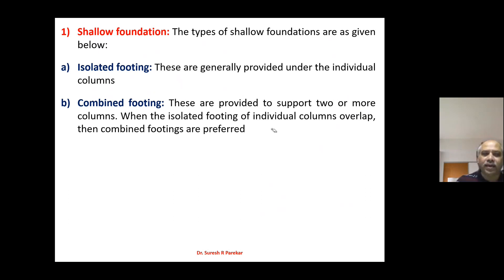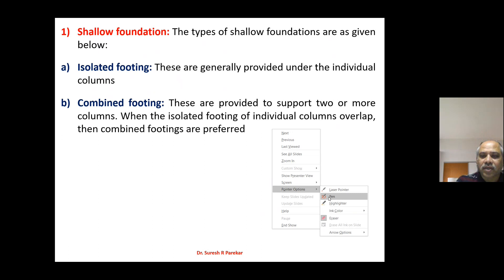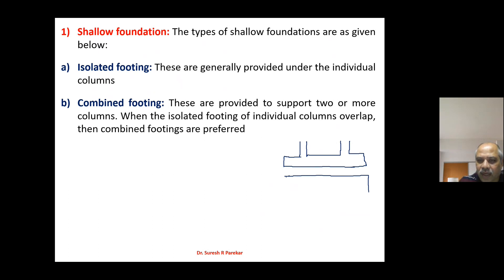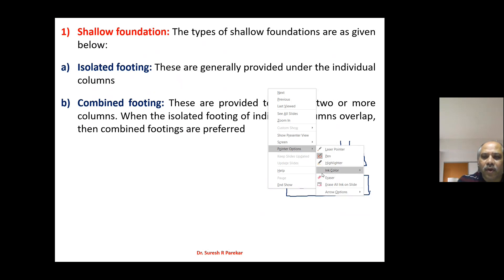Then we have combined footing. These are provided to support more than two columns. If we draw it, we provide two or more columns — here I am showing two columns — and that is called combined footing. This may be trapezoidal or rectangular; our syllabus is related to rectangle only. So we have one column and a second column in this rectangular combined footing, designed for two or more columns.